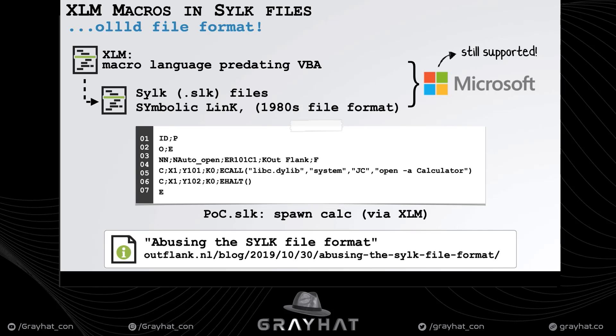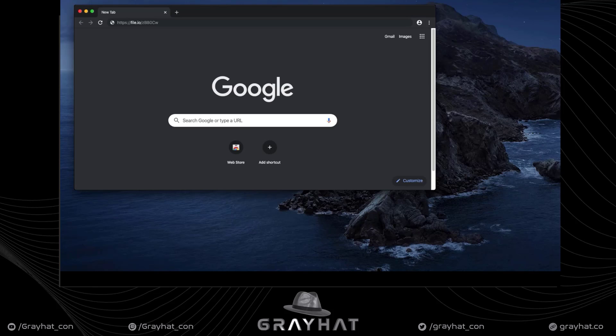Microsoft loves to support old file formats for compatibility, so even these file formats from the 1980s are still supported by Microsoft Excel. The researchers found they could create XLM macro code that would automatically execute even if the user had configured their system to never run macros — kind of ironic. I wrote a simple proof of concept, and when a malicious Office document is downloaded and opened, calculator is popped with no macro-based alerts or warnings.